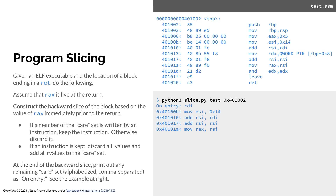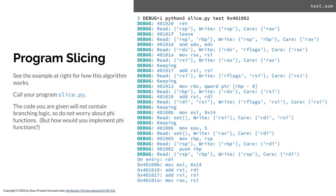If we look at the program over there, you'll see we'll be able to make our way all the way back to the beginning and we still have a non-empty care set — it's RDI. So if we want to know what the return value is at the end of that little piece of code, we need to know what RDI is at the beginning. Once this is turned in, I'll post my slice program in the extras.